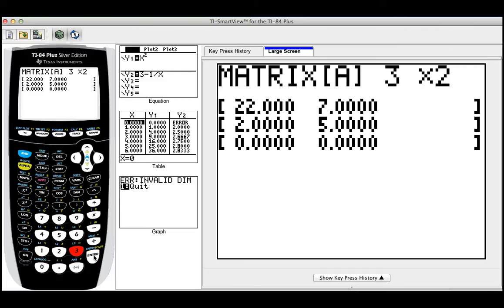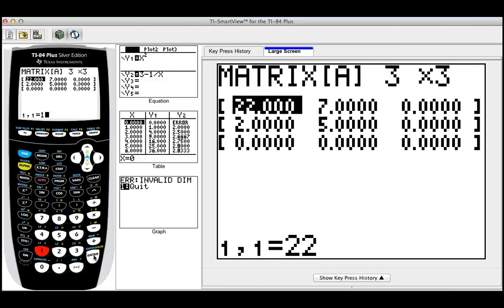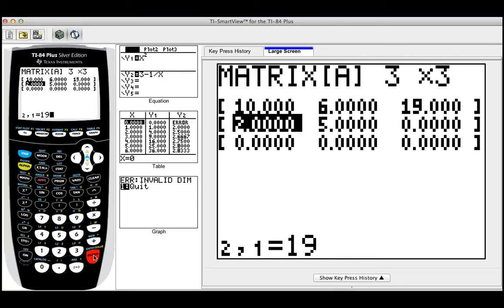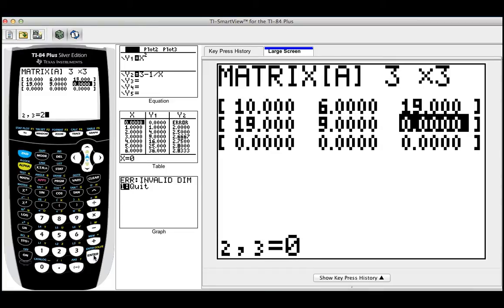Our matrix was a three by three because we have three columns and three rows. So I'm going to do three by three and I'm going to put the numbers that we had in the table, which was 10, 6, 19, 19, 9, 29.